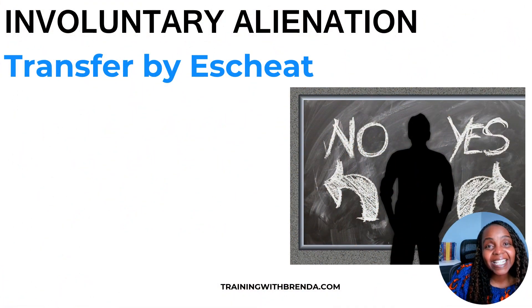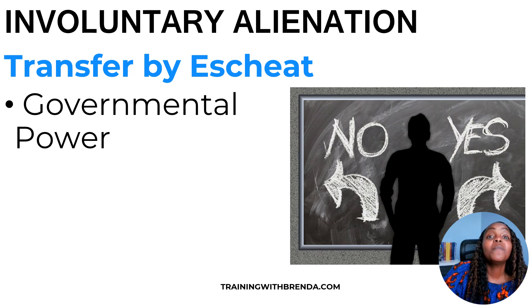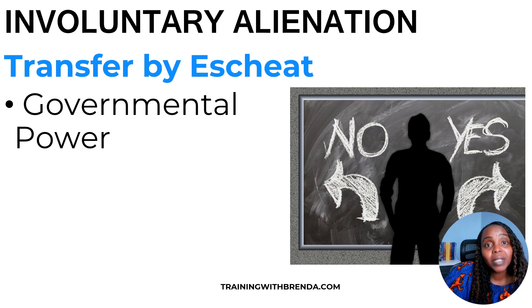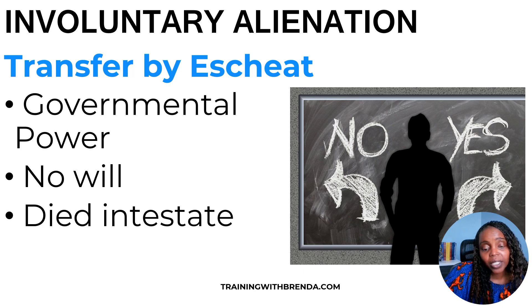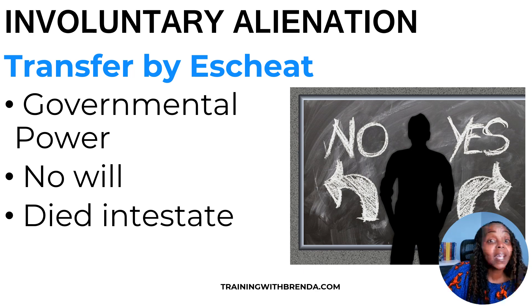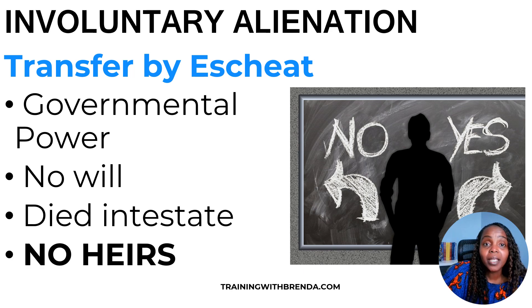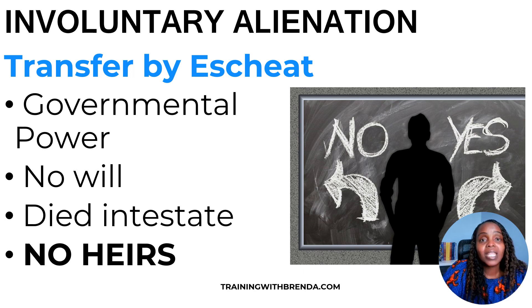Transfer by escheat. How this comes about: you do not have a will in place, you've passed away. It's a governmental power. Since you died intestate and they have checked around and there are no heirs to receive this property, the government will take the property. There are no heirs — that's how the property is going to be transferred to the government.